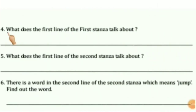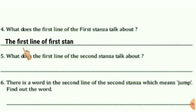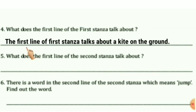Question 4: What does the first line of the first stanza talk about? The first line of the first stanza talks about the kite on the ground.